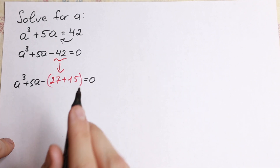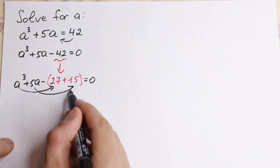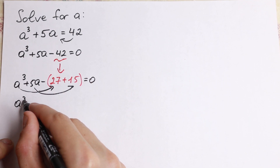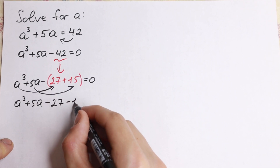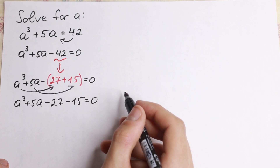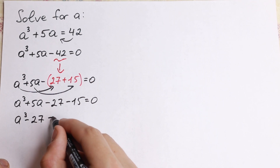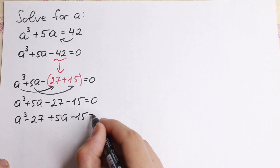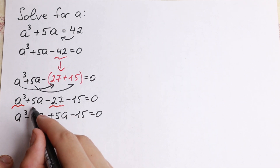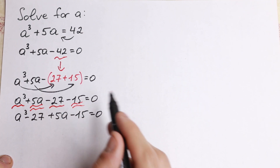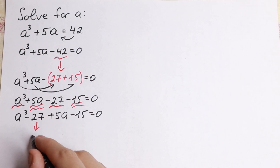Take a look at why this is really good for us. Right now we can group a cube with 27, and 5a with 15. So we rearrange to get a cube minus 27 and plus 5a minus 15. We just group elements: a cube and 27 together, and 5a and 15 together.